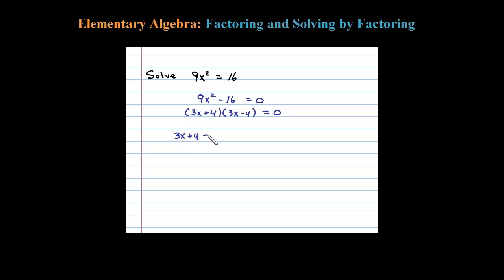So 3x plus 4 equals 0, or 3x minus 4 equals 0, and then solve each one of these individually.